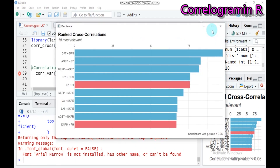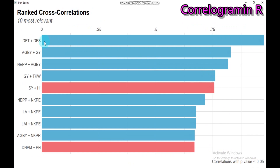As you can see, the association between DFT and DFS is the highest, around 0.9 to 1. The correlation values range from 0.25, 0.75, and above — very strong associations. The second highest is GPY with grain yield, then GY with TKW. Variables shown with a red line indicate a negative association. These are the top 10 most relevant associations among all variables.